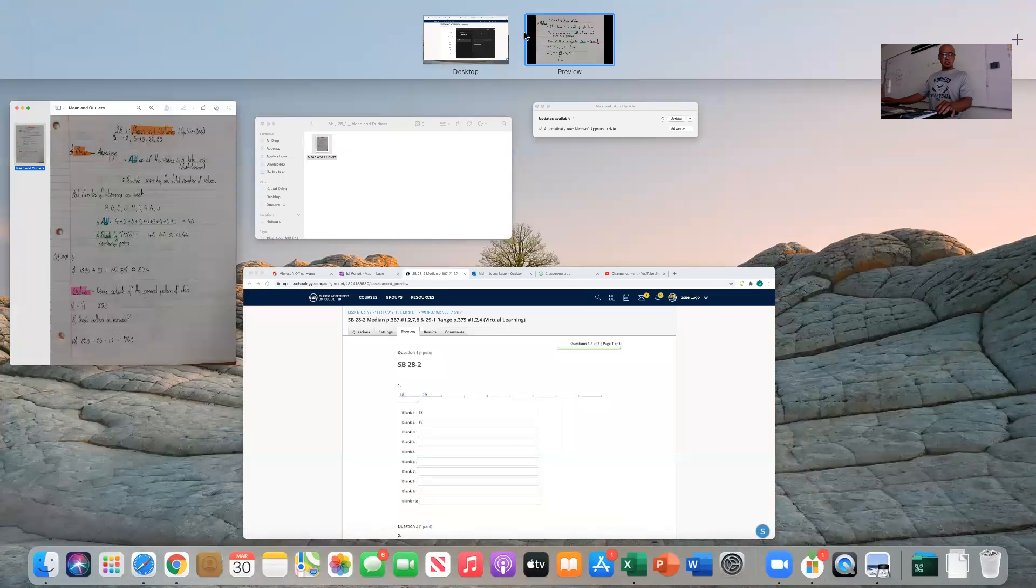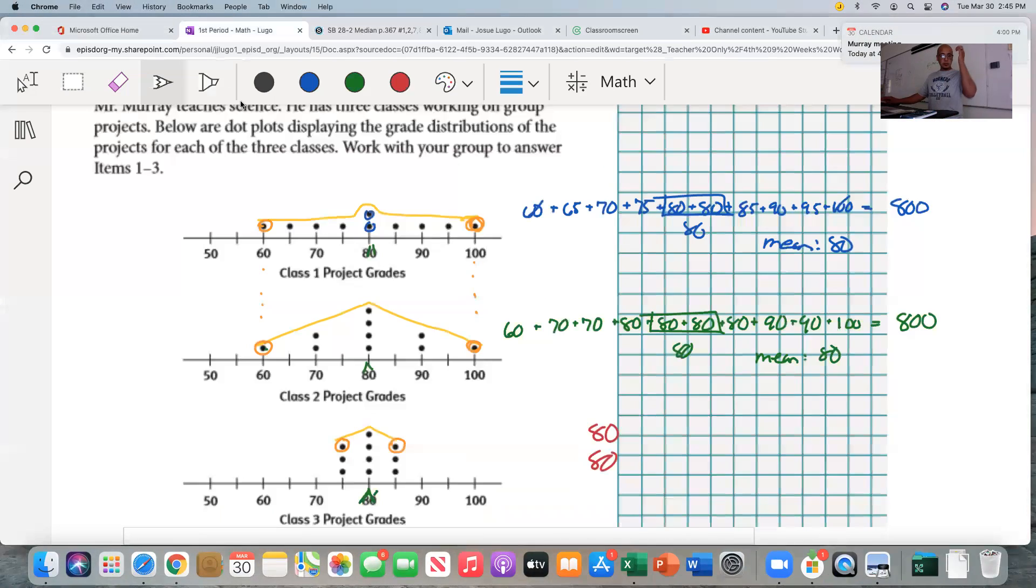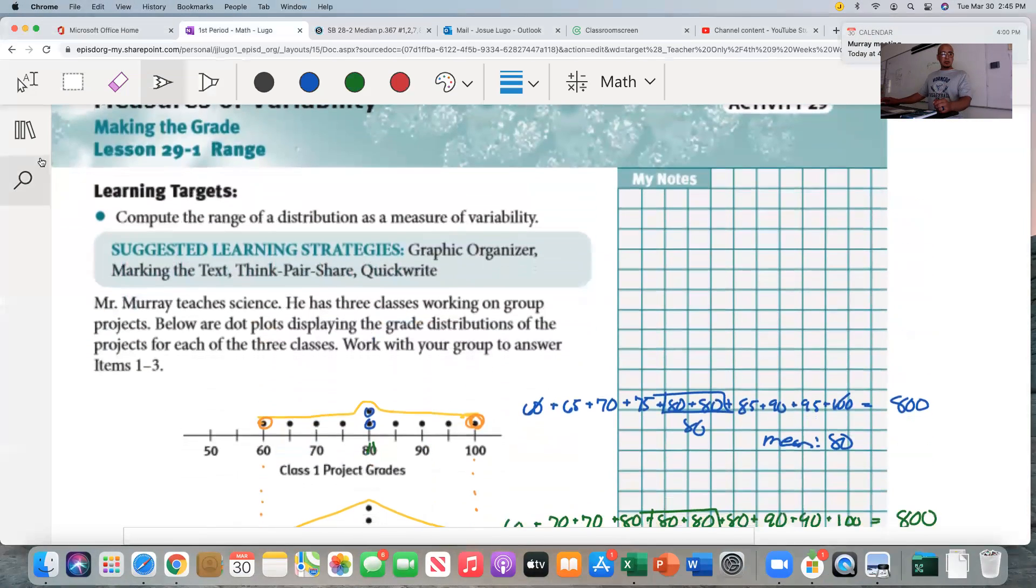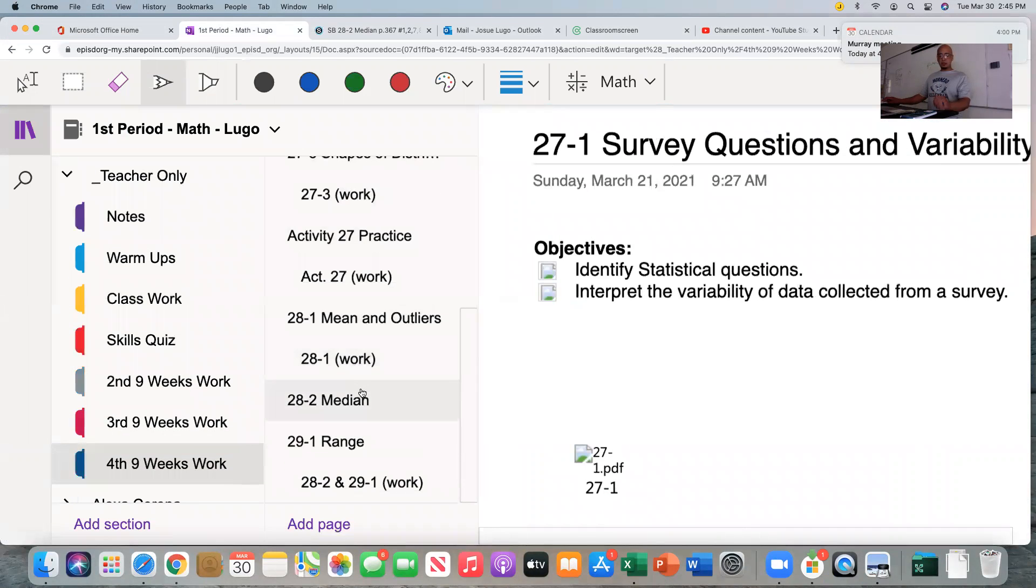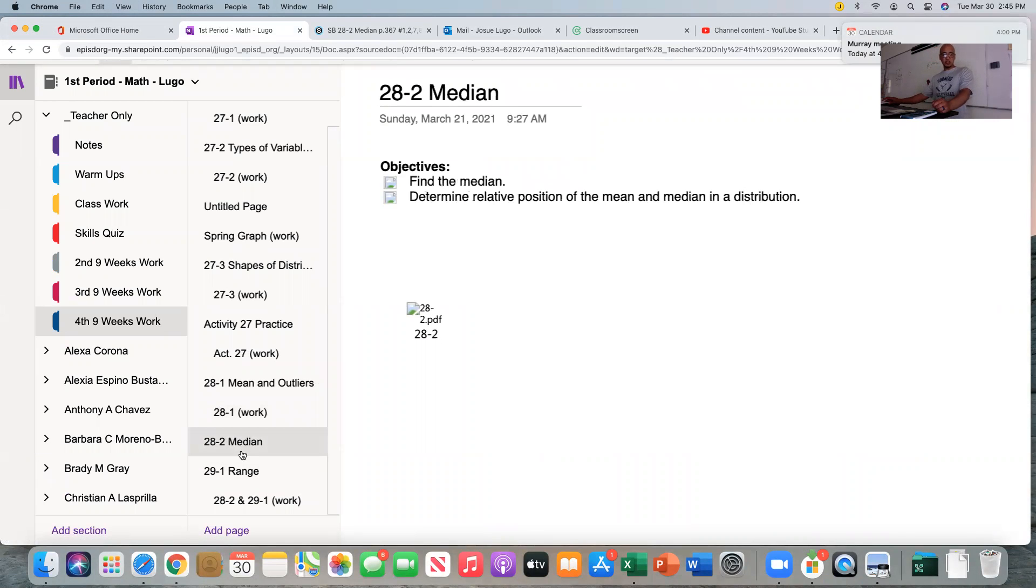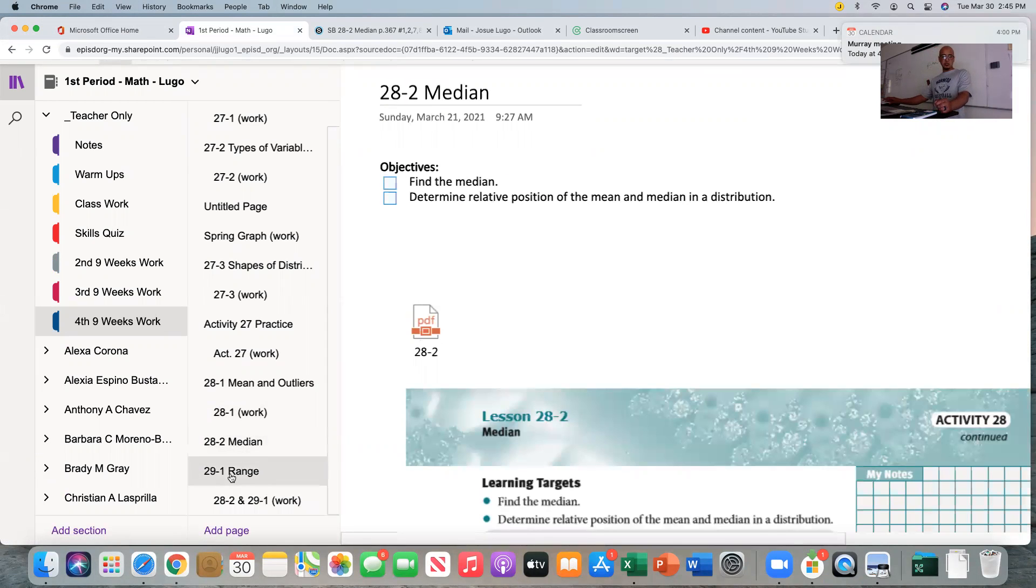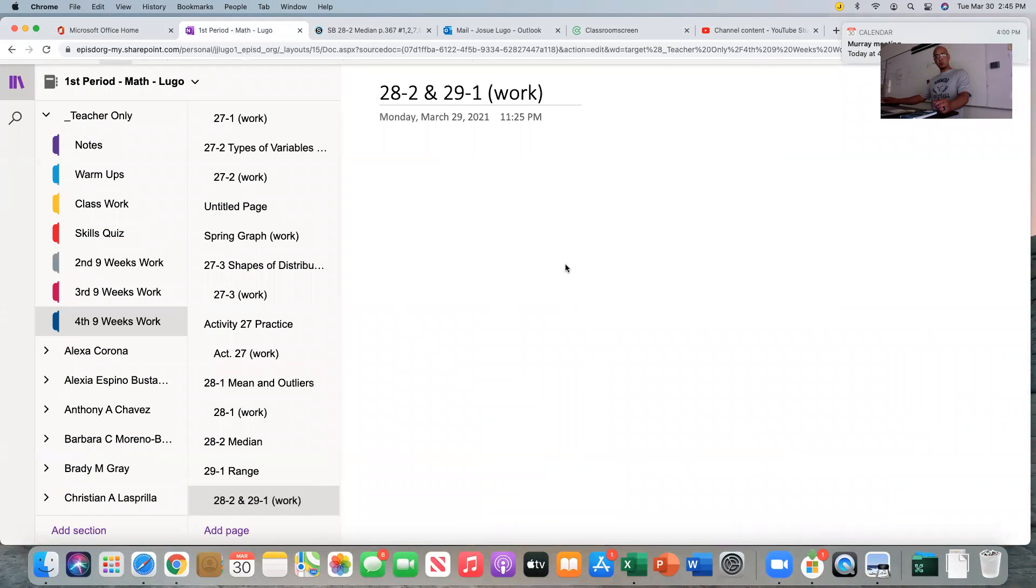Just as a heads up, if you go to OneNote, you will note that under four or nine weeks' work, there are two different sections for this. There's 28-2, median, and 29-1, range. However, there's only one section for the work here. You will put the work for both of these.